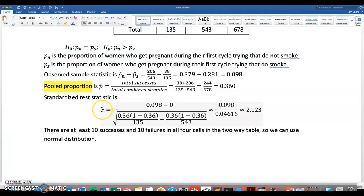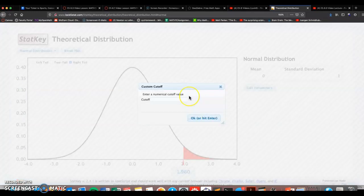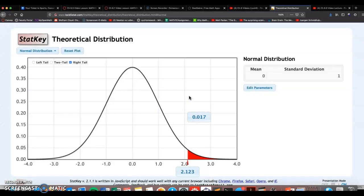And don't forget, we're looking at z equals 2.123. If I've got a z test statistic, we want to keep the mean at zero, standard deviation at one. The observed standardized test statistic is positive 2.123, so I'm going to click right tail on this bottom value right here, change that to 2.123.